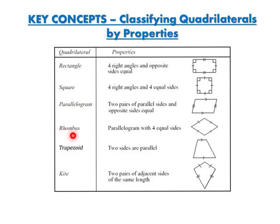A rhombus is a parallelogram with four equal sides — all the sides are the same length. A rhombus is like a square that has no right angles, and a square is also a rhombus.